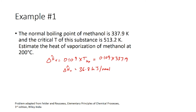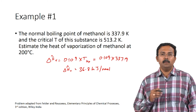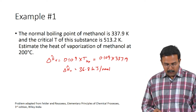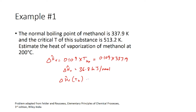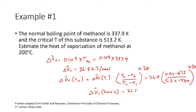Now we have the heat of vaporization at the normal boiling point. However, we need ΔHv at 200°C, so we use Watson's correlation: ΔHv(T2) = ΔHv(T1) × [(Tc − T2) / (Tc − T1)]^0.38. Substituting: 36.8 × [(513.2 − 473) / (513.2 − 337.9)]^0.38, which gives ΔHv at 200°C as 21 kJ/mol.